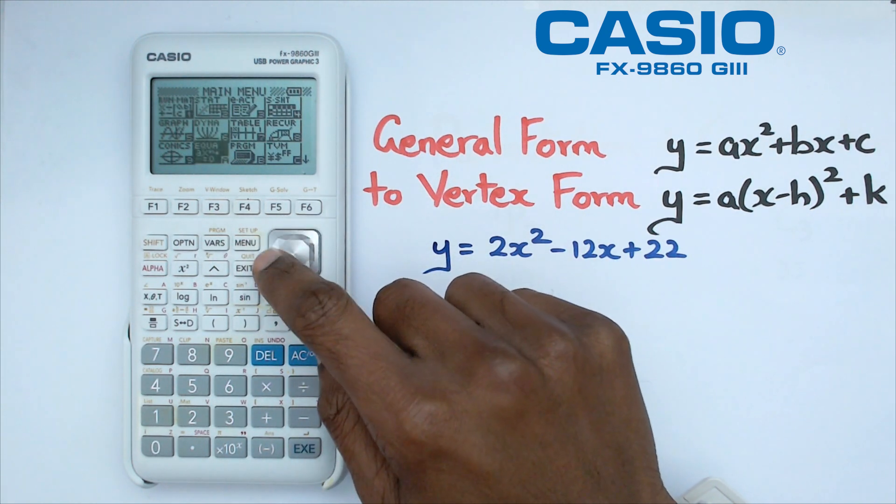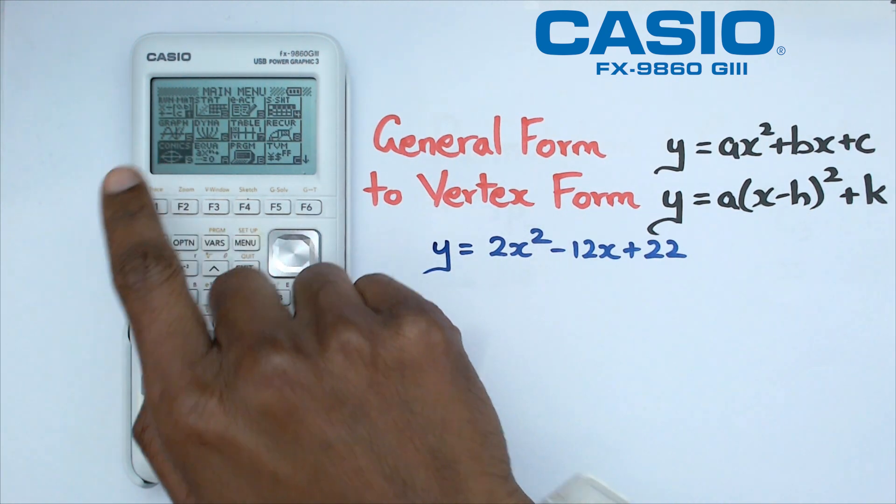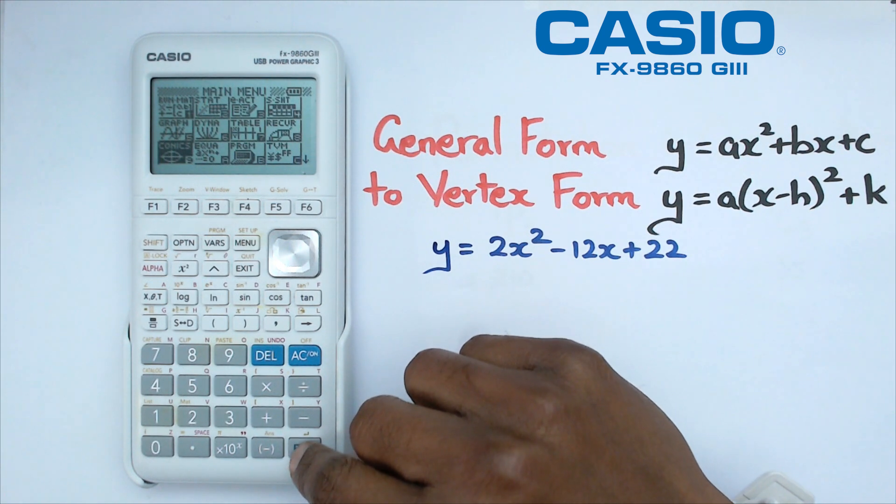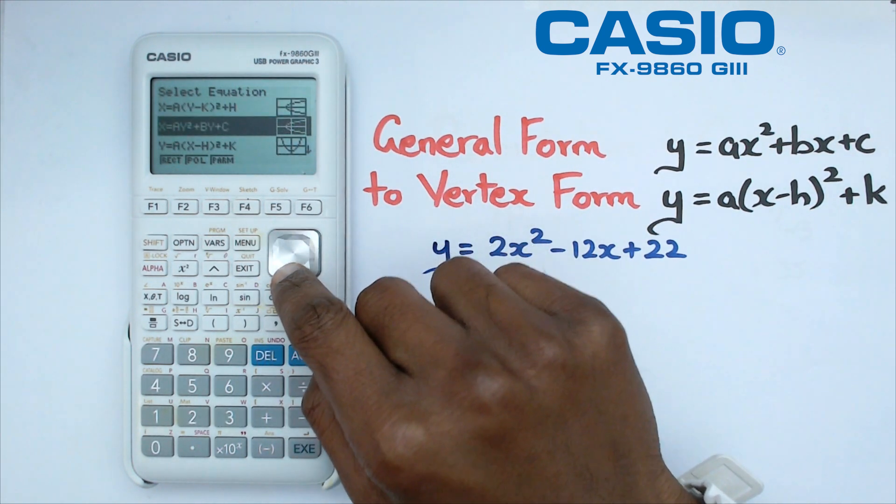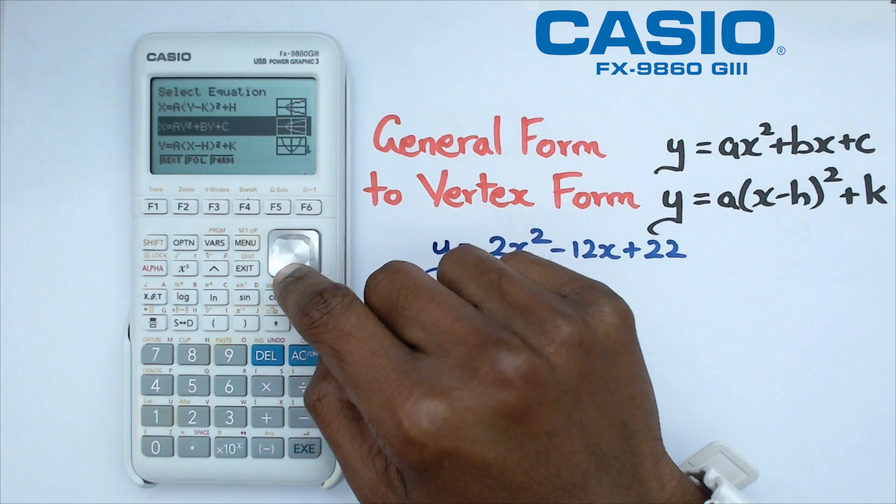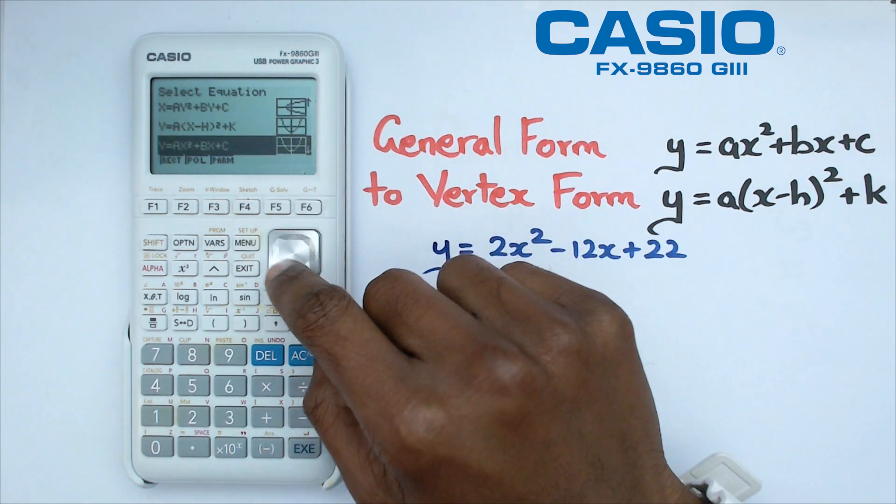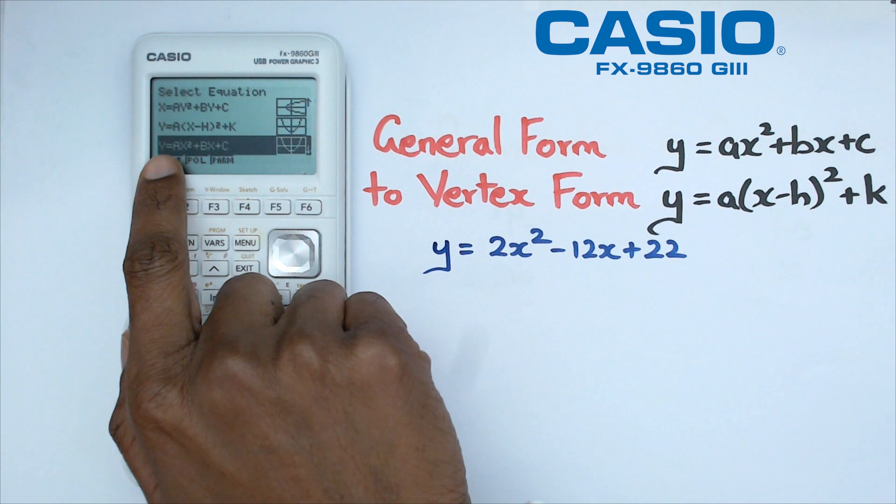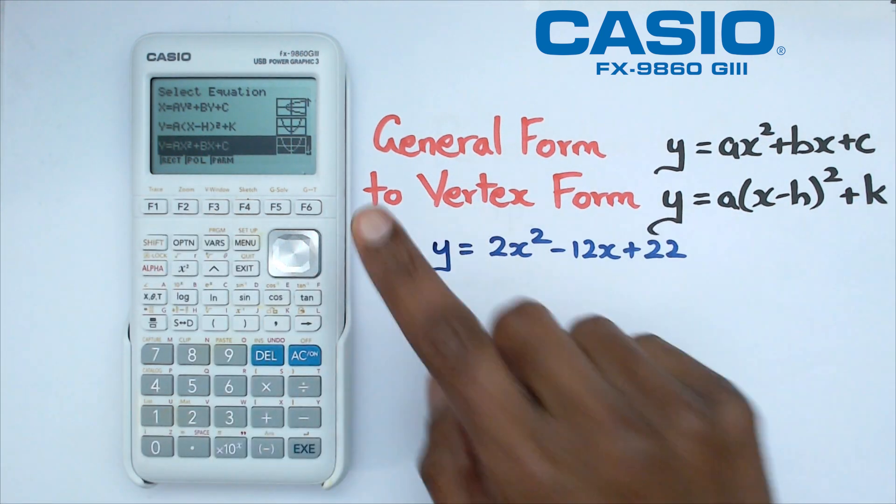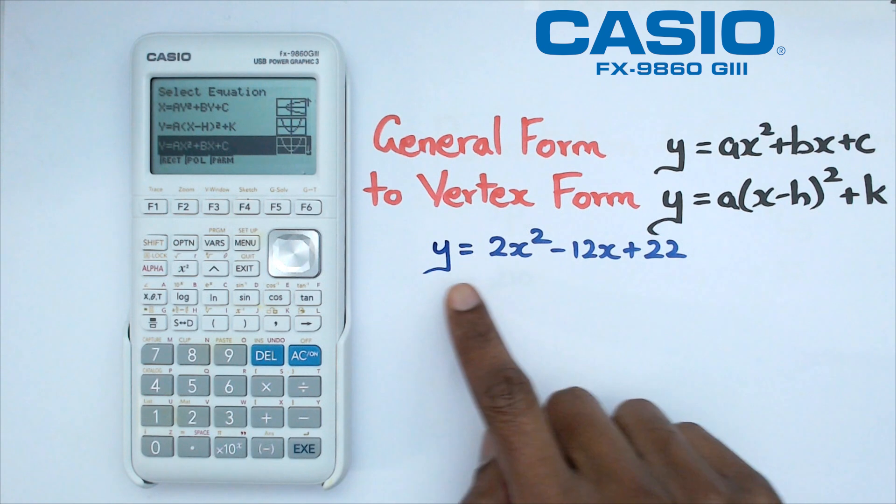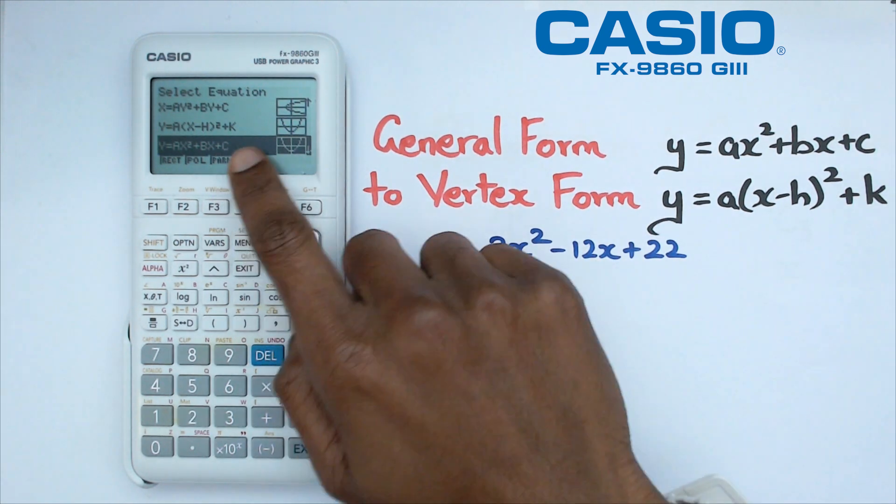And from here what we're going to do is we're going to navigate our way down to this particular menu which is the conics. I'm going to press exe and we're simply going to move down and what you'll have is you'll have a whole bunch of equations there, but the one that we're going to go towards is the y equals ax squared plus BX plus C, which pretty much is this format right here which is in the general form.